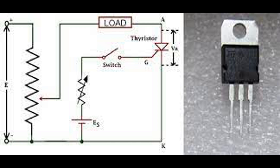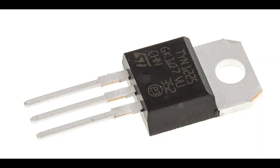Forward conducting mode (on state). To turn on the thyristor, a small positive voltage is applied to the gate terminal relative to the cathode. This gate current initiates the breakdown of the J2 junction, allowing current to flow from the anode to the cathode. Once turned on, the thyristor remains conducting even if the gate current is removed.